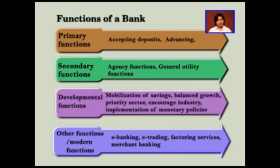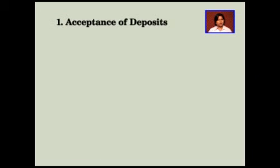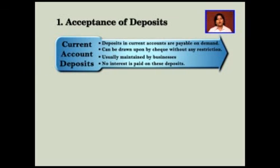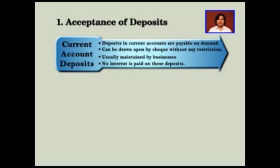The first and foremost function is the acceptance of deposits. The bank usually accepts three types of deposits. Number one, current account deposit. Normally, these accounts are opened by the business class. The deposit in this account is payable on demand and can be drawn by cheque without any restrictions. There is no interest paid on these deposits. However, the bank offers various other services to current account holders by charging a nominal fee, the most important being the cheque facility.